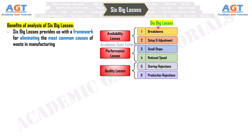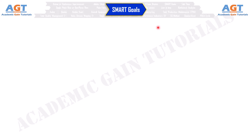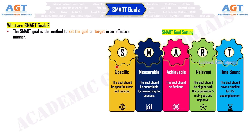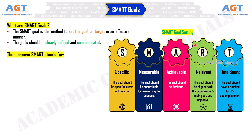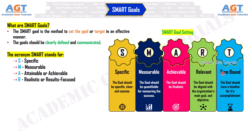Number 9: SMART Goals. SMART Goals is a method to set goals or targets in an effective manner. Goals should be clearly defined and communicated. The acronym SMART stands for: Specific, Measurable, Attainable or Achievable, Realistic or Results-Focused, and Time-Bound.